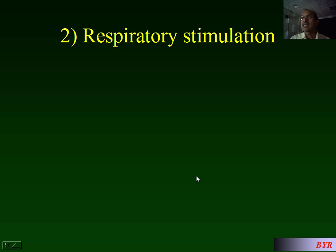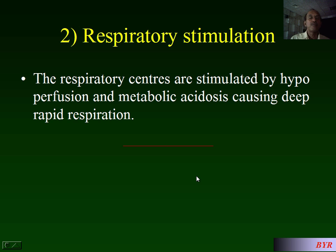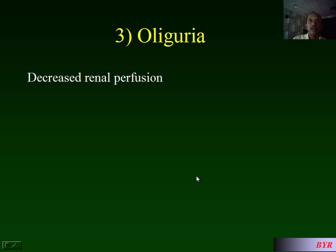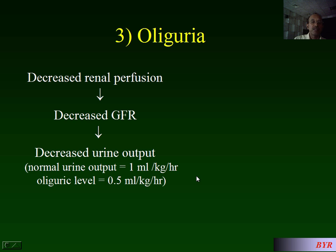The second sequela is respiratory stimulation. The respiratory centers are stimulated by hypoperfusion and by metabolic acidosis, causing deep, rapid respirations. The third sequela is oliguria. Decreased renal perfusion due to renal vasoconstriction leads to decreased glomerular filtration and decreased urine output.